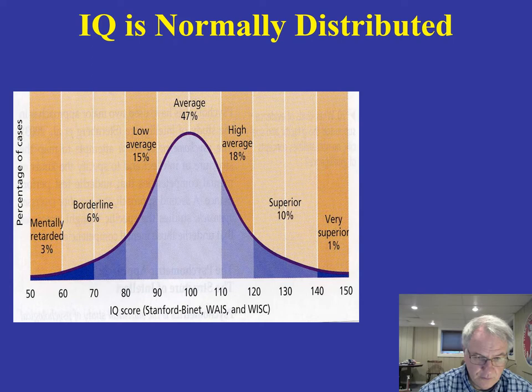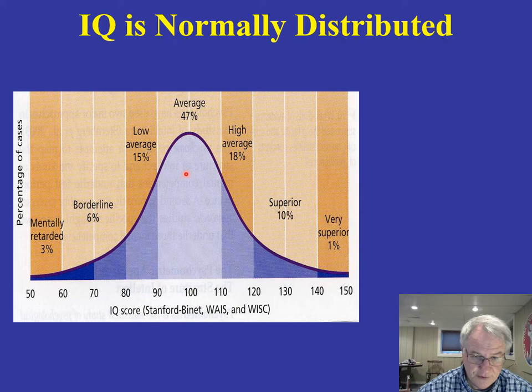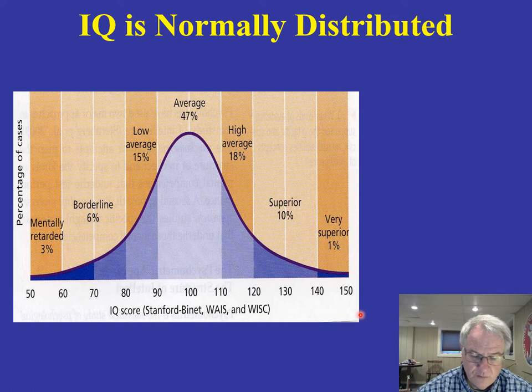This figure shows IQ scores in terms of this distribution. 100 is the average. These are the extremes — this is low, this is very high. This is the percentage of individuals at each one of these various IQ scores. IQ as measured by standardized IQ tests — the Stanford-Binet, the WAIS, the WISC.